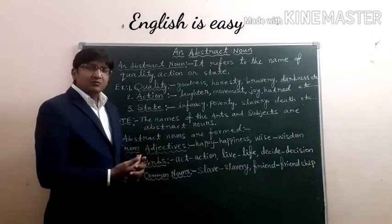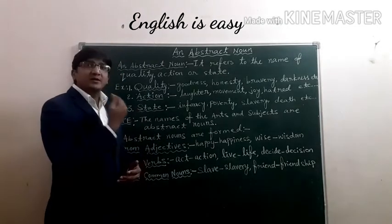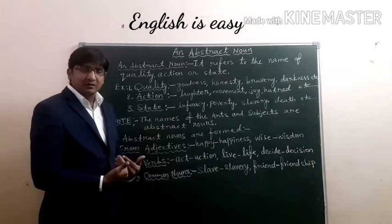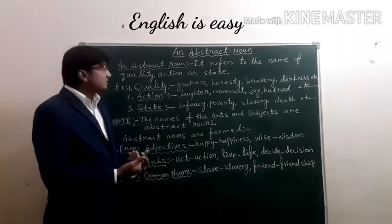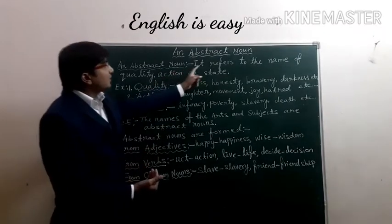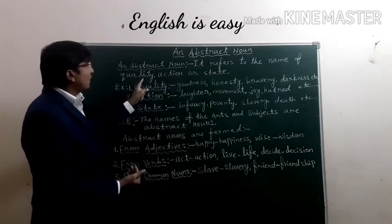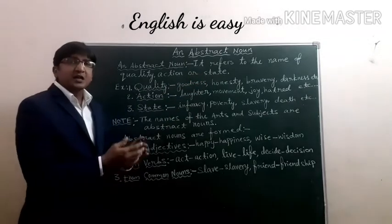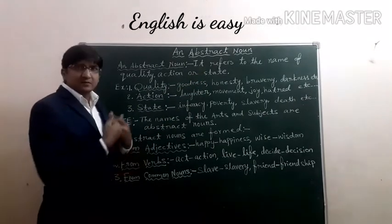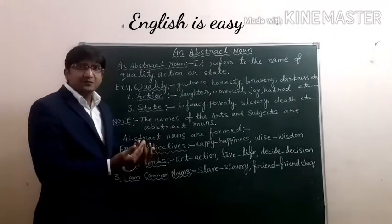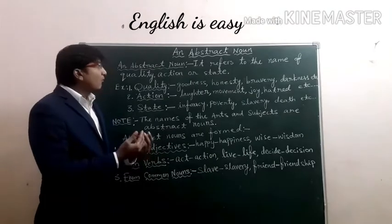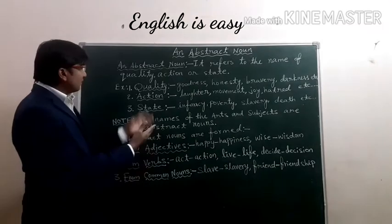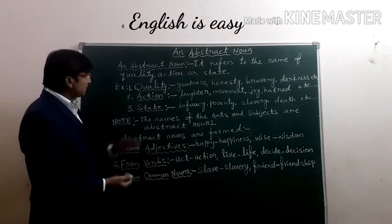An abstract noun is a noun which we can't see or touch, but we can feel. In other words, it refers to the name of a quality, action, or state. It tells about the name of a quality, state, or action. So here, there are a few examples.